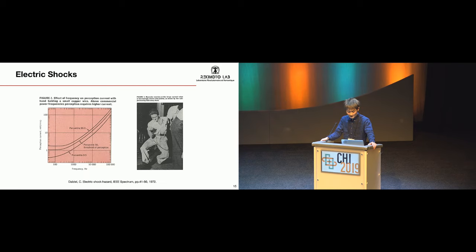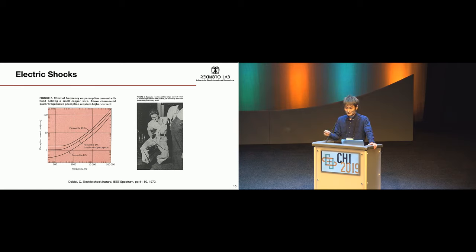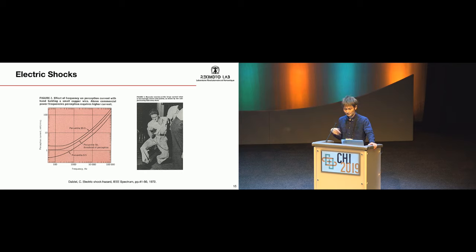Regarding frequency, these figures are extracted from a paper presented in 1972, where researchers changed various parameters and observed how humans perceive the currents. Thanks to those participants, we now know how we perceive current depending on the frequency used. If the frequency gets higher, the current becomes more difficult to perceive. So using a higher frequency can be a bit safer than using low frequencies.